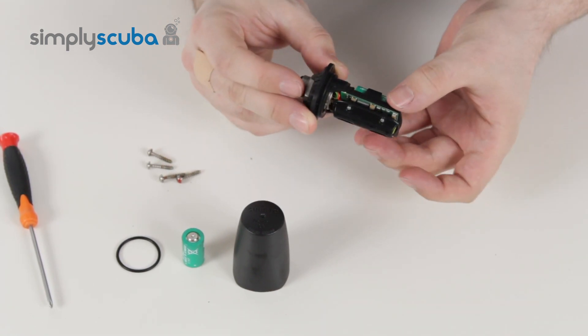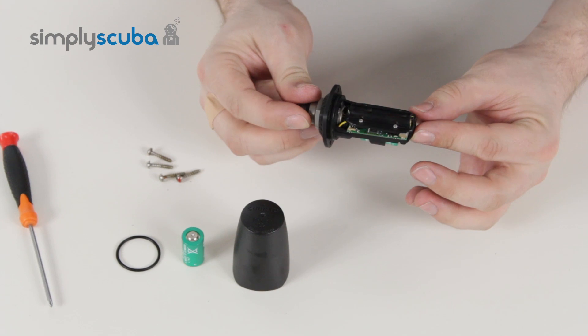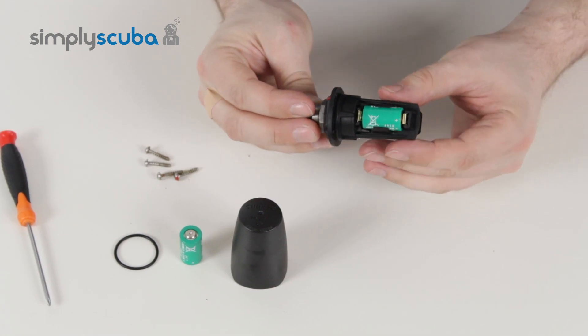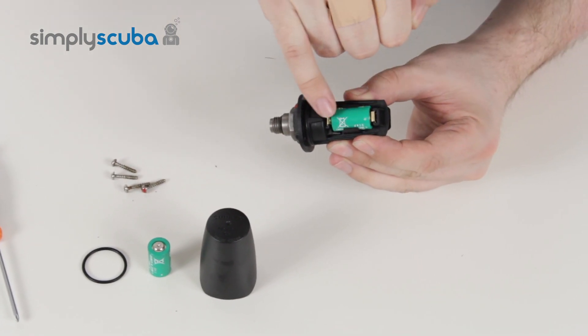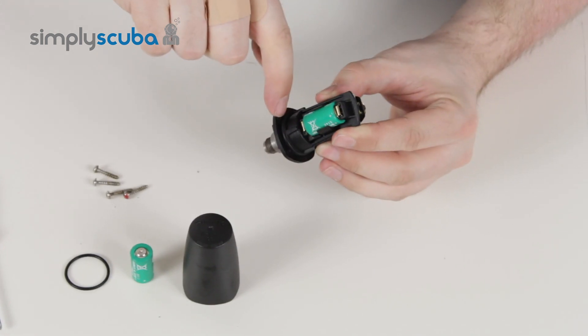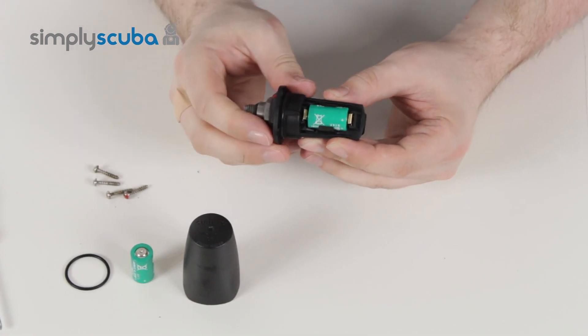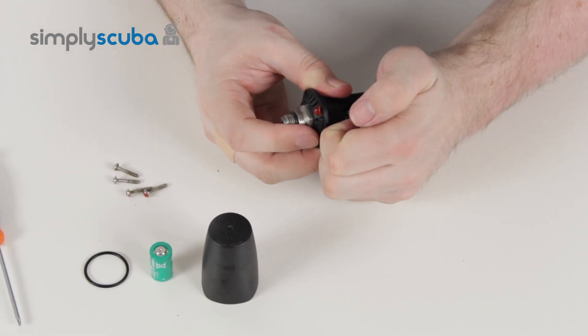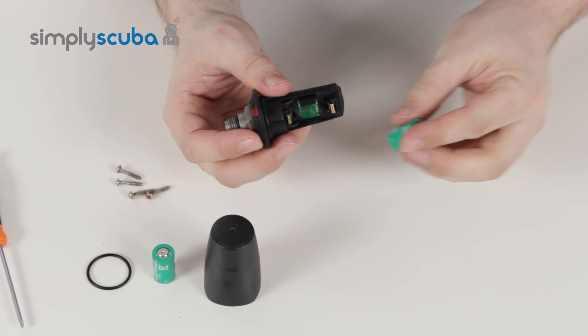This is the inside of your transmitter. The two parts that get changed are the green battery here and the o-ring on the inside. Remove the battery first, put that out and throw that away.